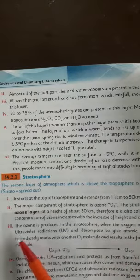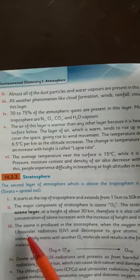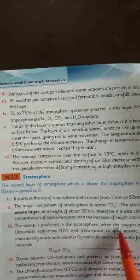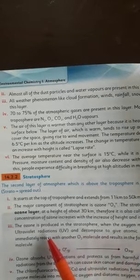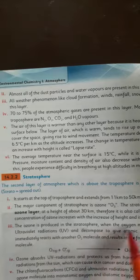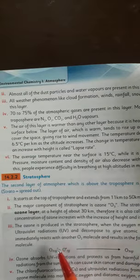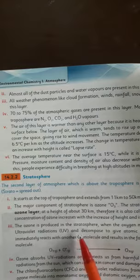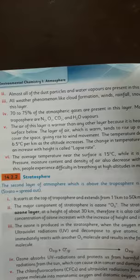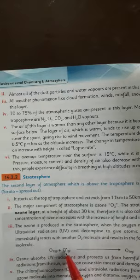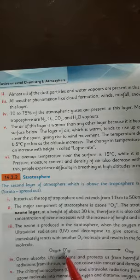Now, how is ozone naturally formed? The ozone is produced in the stratosphere when the oxygen molecule O2 absorbs ultraviolet radiation. Due to UV ray absorption, the oxygen molecule decomposes and forms two atomic oxygen. This atomic oxygen — also called excited oxygen — is very reactive because atoms don't exist in atomic form. So it combines with ordinary O2 to form O3.